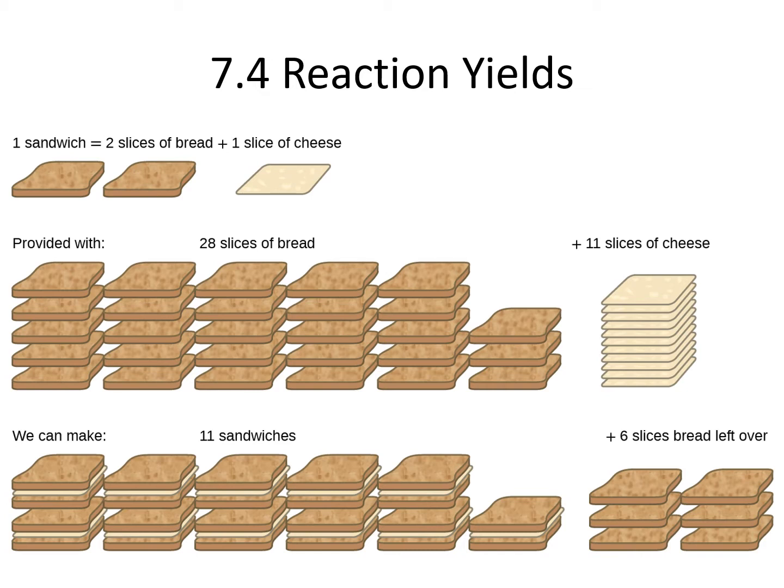Let's look at the analogy of assembling a sandwich. We need two slices of bread and one slice of cheese to make our grilled cheese sandwich. Let's say we have a bag of bread that contains 28 slices and a pack of cheese that contains 11 slices. That is our inventory — what we have to work with. That doesn't necessarily mean we're going to use all of them.